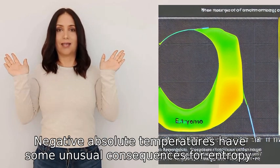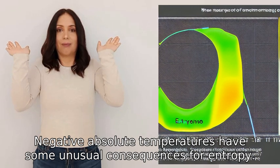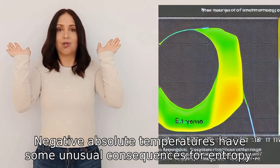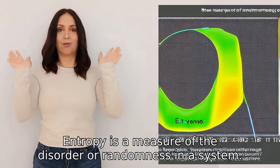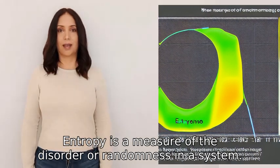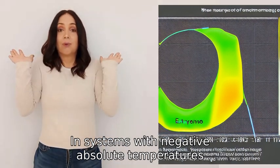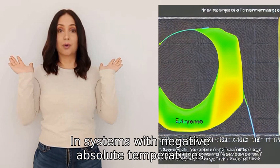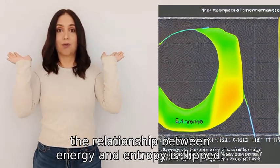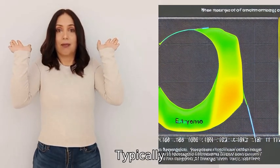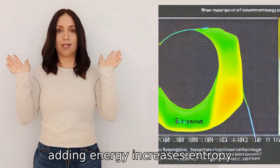Negative absolute temperatures have some unusual consequences for entropy. Entropy is a measure of the disorder or randomness in a system. In systems with negative absolute temperatures, the relationship between energy and entropy is flipped.